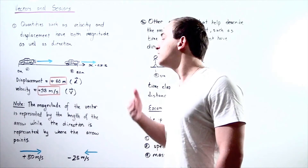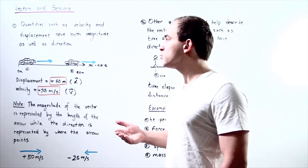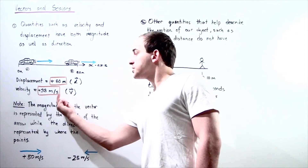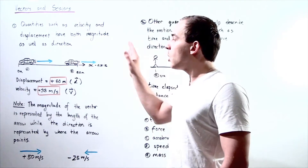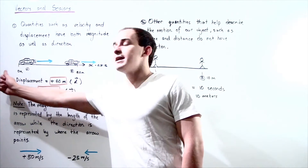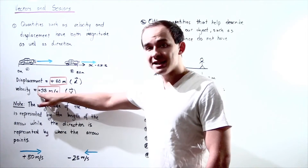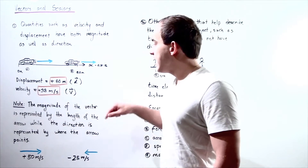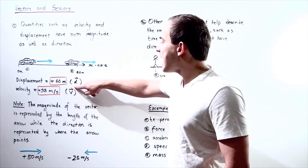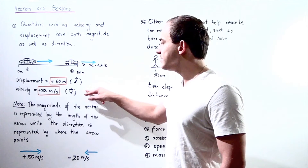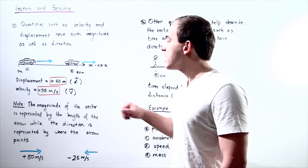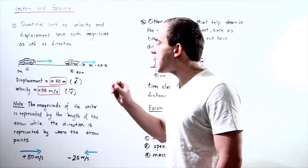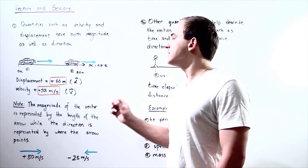Velocity is also a vector, so it has both magnitude — for example, 33 meters per second — and direction, given by the sign. Since our velocity is toward the right, we have a positive sign. Just like displacement, velocity is represented by a symbol with an arrowhead on top. The arrowhead simply means that the physical quantity is a vector — it has both magnitude as well as direction.